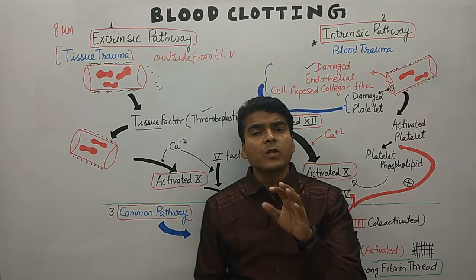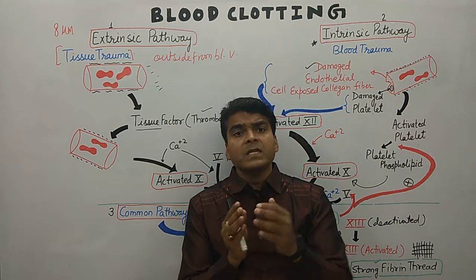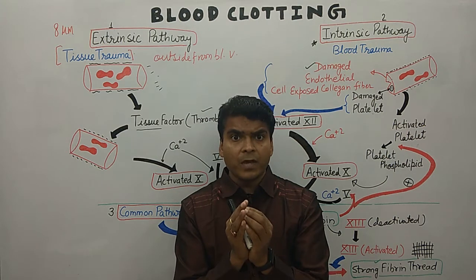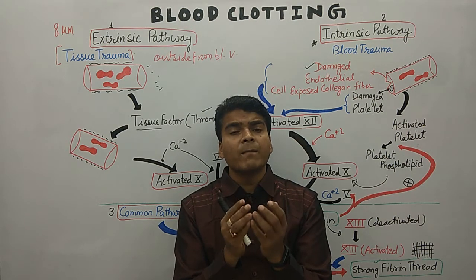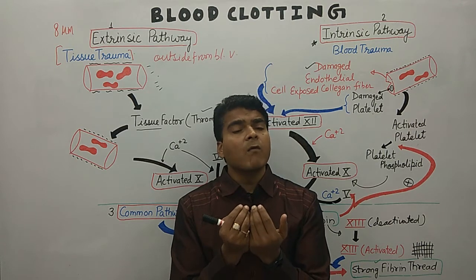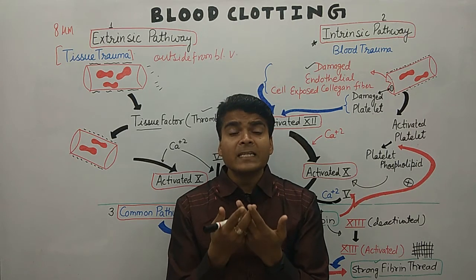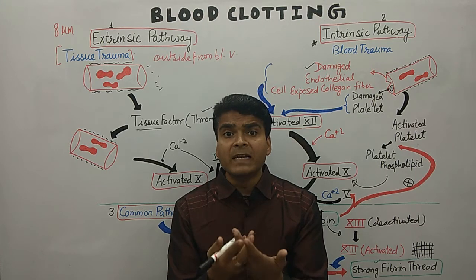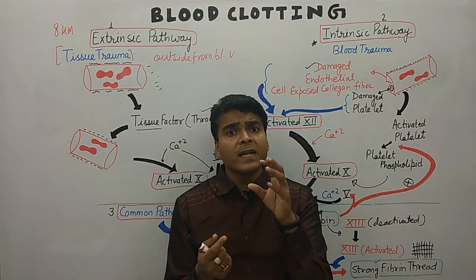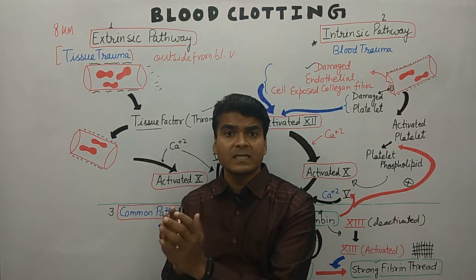So now let's look at blood clotting. Why does blood clotting occur? Whenever there is an injury in our blood vessels, there is bleeding in the human body. The body needs to stop this bleeding, and for this the body has a process that is known as hemostasis.